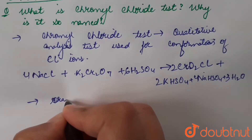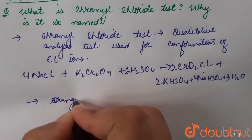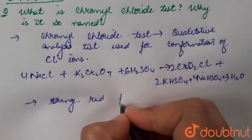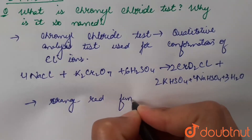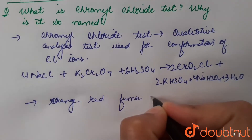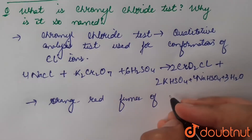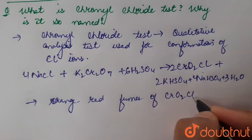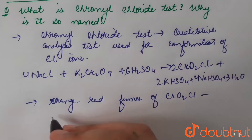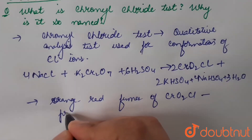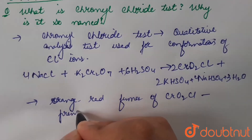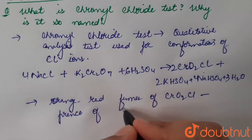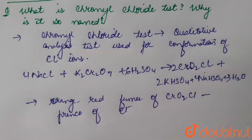The orange-red fumes of chromyl chloride, CrO₂Cl₂, confirm the presence of chloride ions.